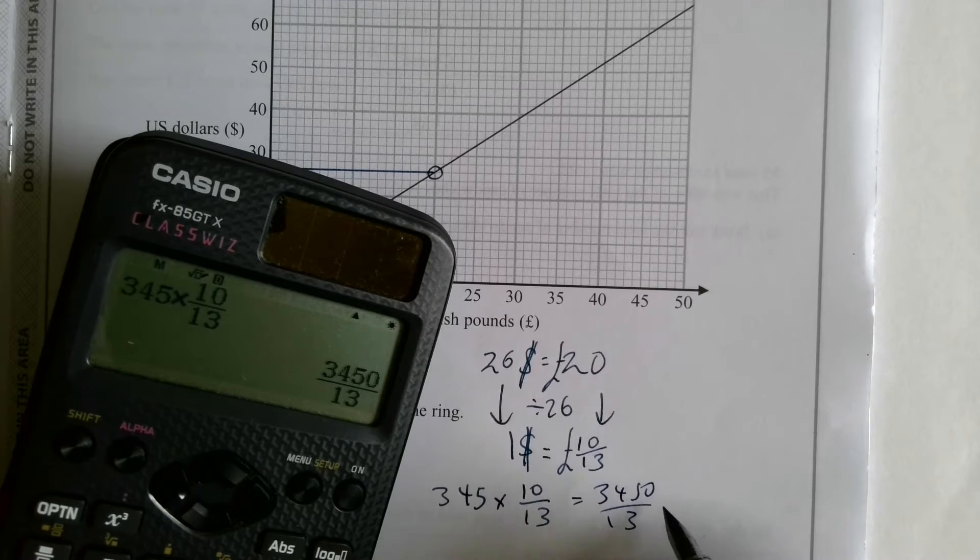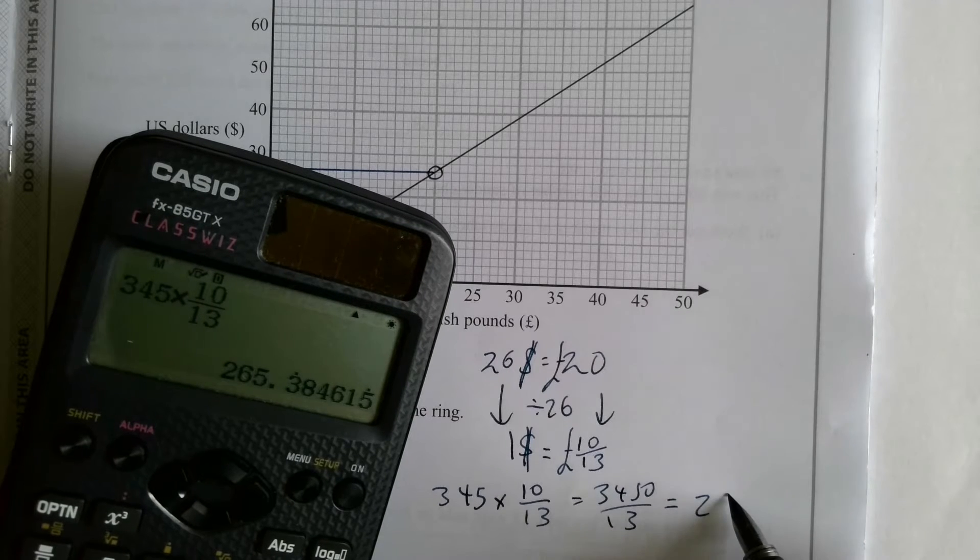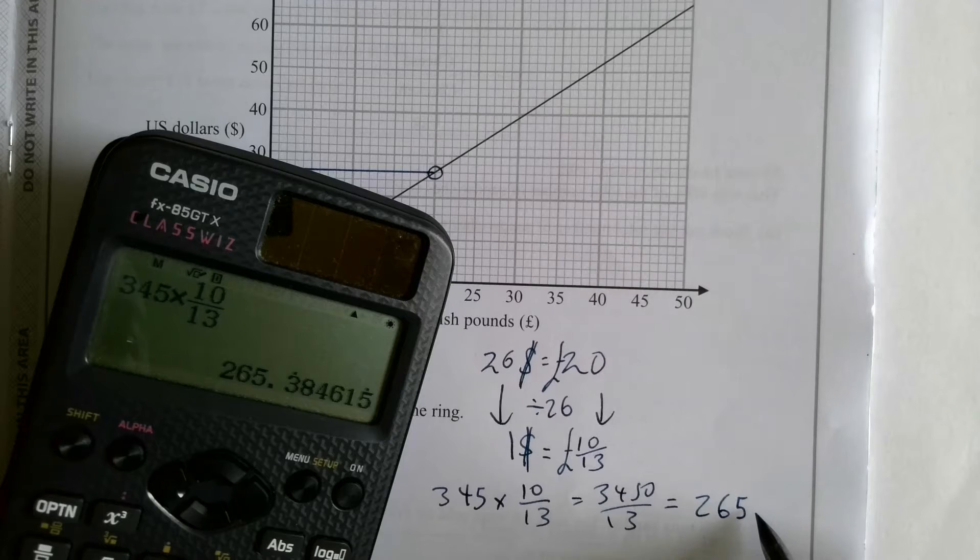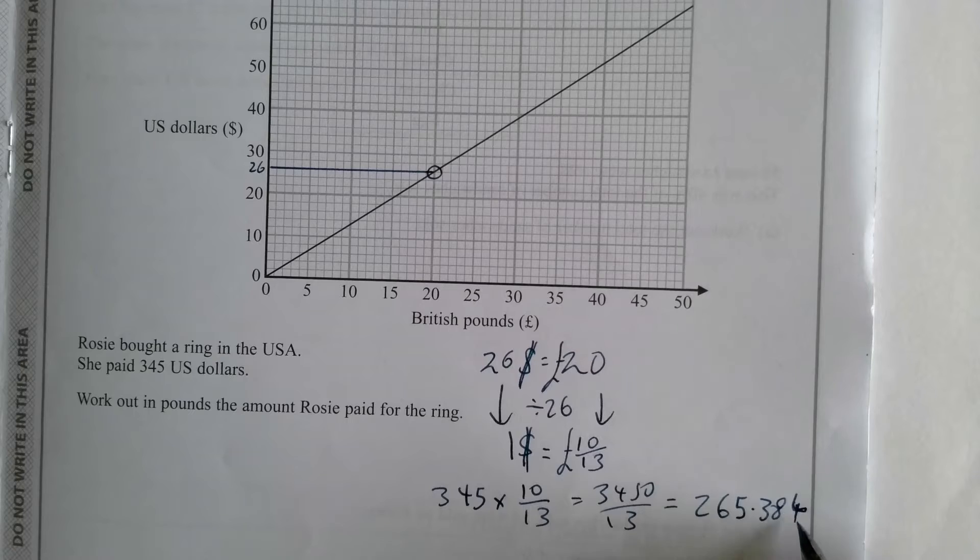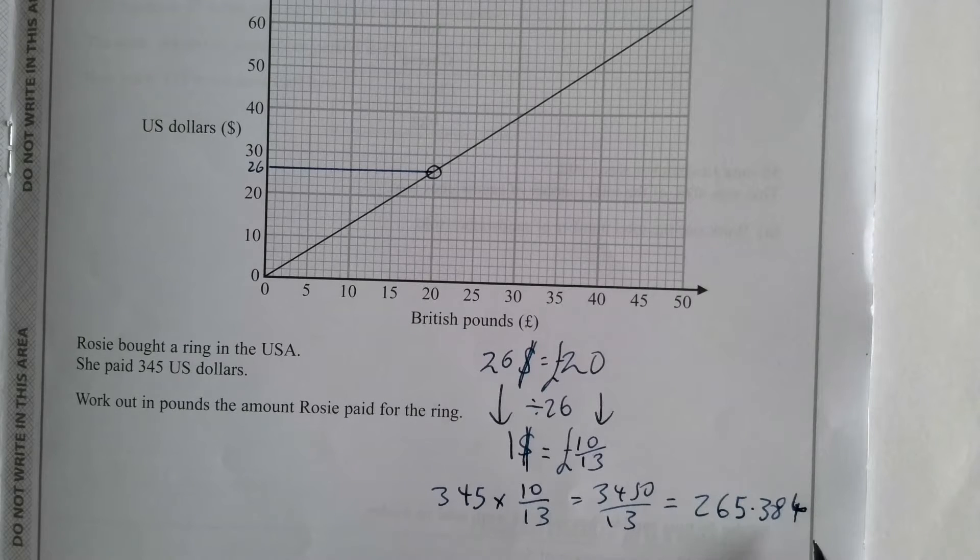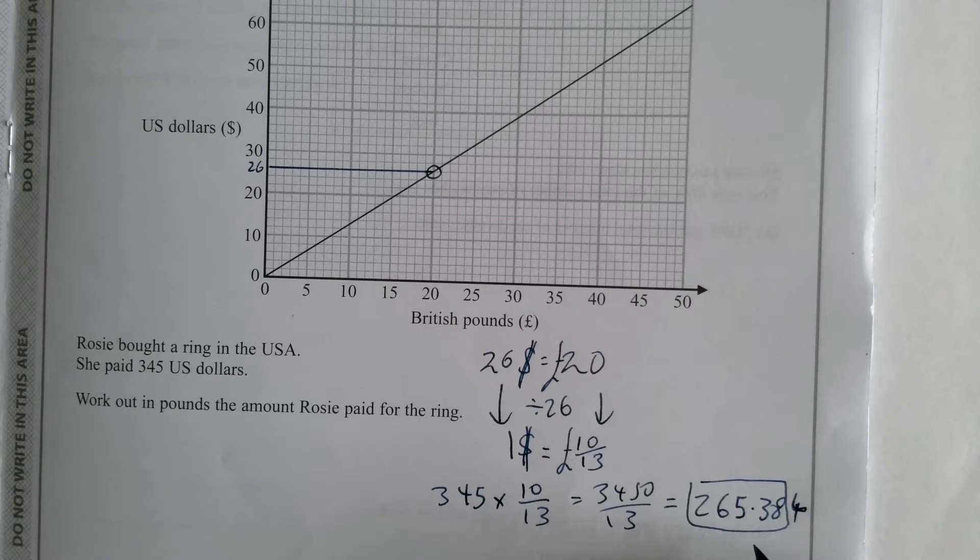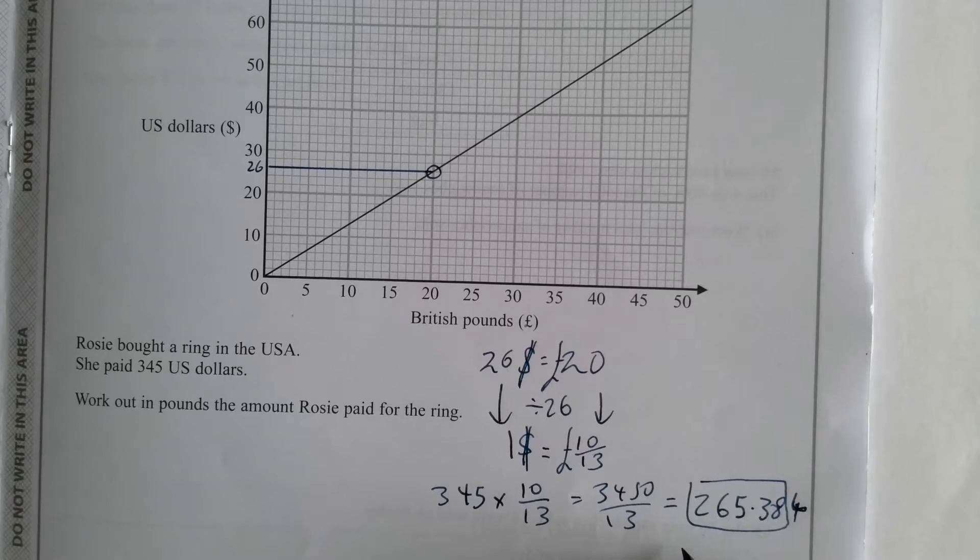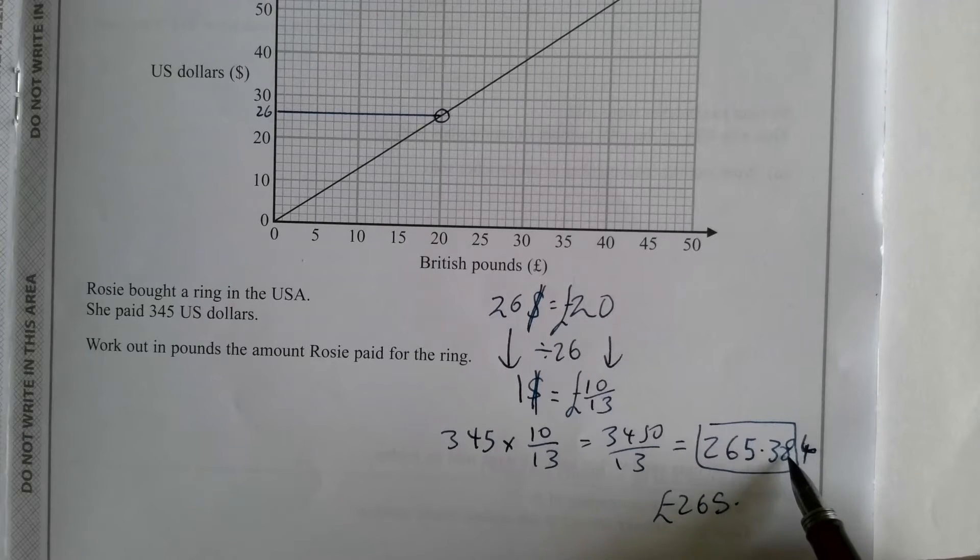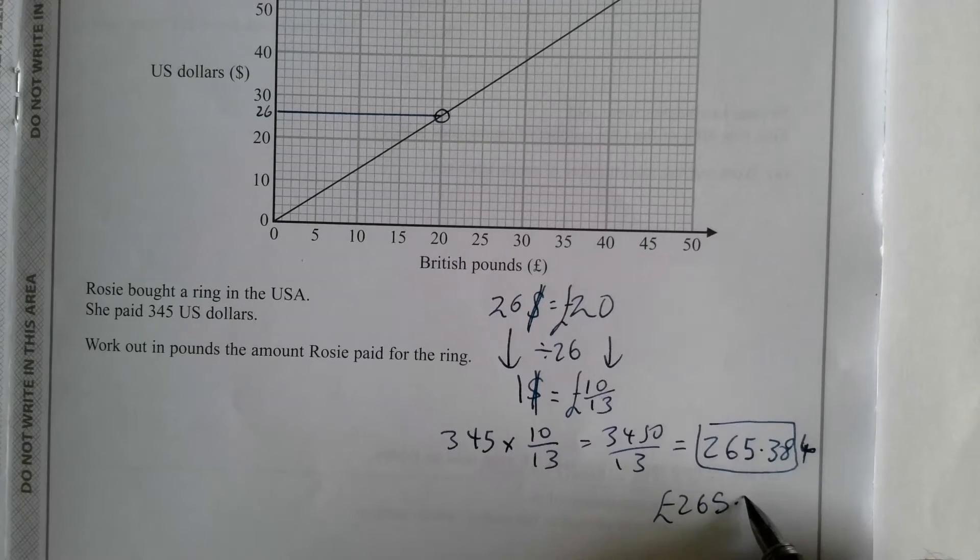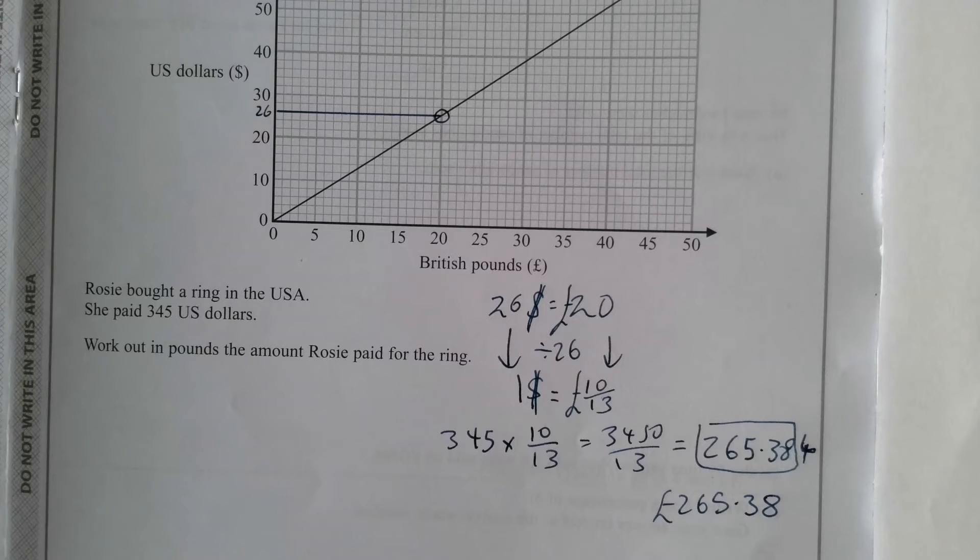What I'm going to do is I'm just going to do 345 times that 0.8 or that 10 thirteenths. If I do 345 times 10 over 13, it gives me that. Now I press S to D. I'm going to write that down, but there's no real need. Press S to D and it's giving me 265.384. Now I've written a third decimal place in there because money is always done to the nearest hundredth. So it's 265 pounds. And because that's a four, that means the eight is going to round down and stay at 38. So 265 pounds, 38.